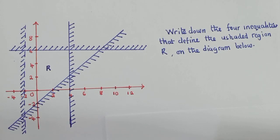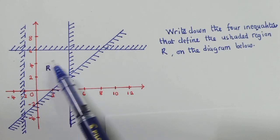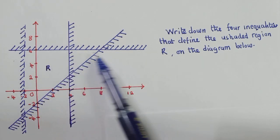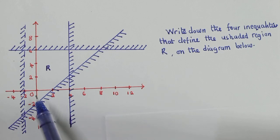This is a question on linear programming. We have been asked to write the four inequalities that we can see here. There are four of them. How do we write this? If it's an exam, the best approach would be to start with the easiest one.